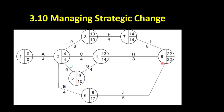To calculate the total float on an activity, let's have a look at the total float time on activity E, which is not in the critical path. The earliest that we could start activity E — we look at the earliest start time, it's week four in this node here. The latest it could finish is week 17 and it only takes four weeks to do. So to work out the latest possible time that we could start: 17 minus four equals 13. So we have to start this activity E by week 13 at the latest, but we could start it as early as week four.